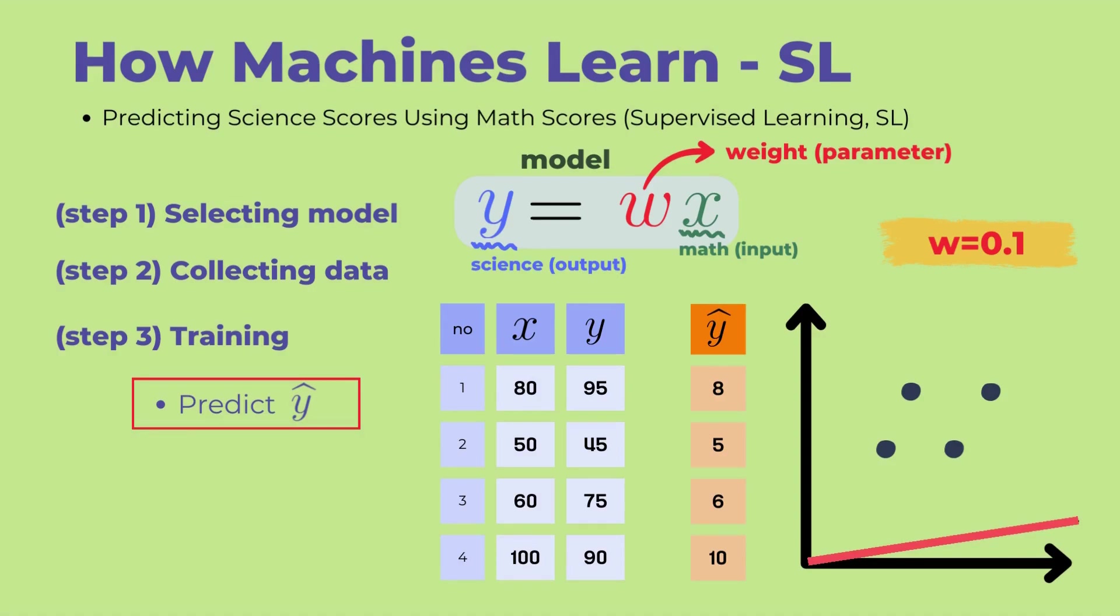However, the student's actual science score is 95, which is significantly different from the predicted 8 points. This is a natural result since we are still in the early stages of learning, and the model will gradually reduce this difference. For reference, the predicted Y values are commonly denoted as Y hat to distinguish them from the actual Y values.